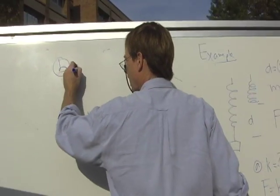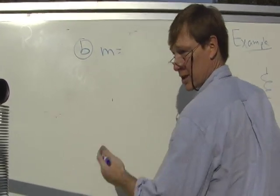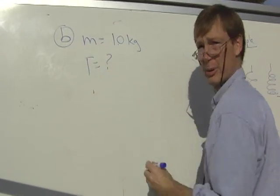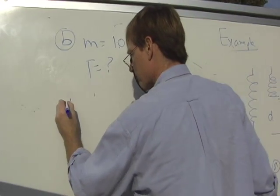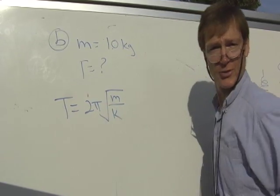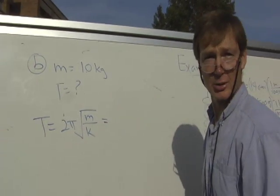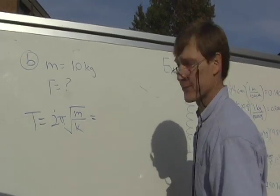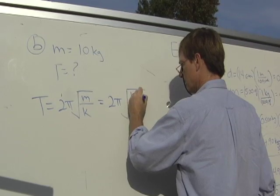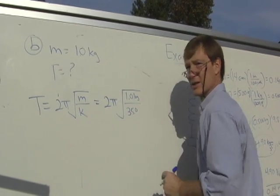Finding the spring constant was the first part. Part B, I have this new mass of one kilogram, and I want to know what's the period of oscillation. The period is 2π times the mass divided by the spring constant. Not the old mass that we determined the spring constant from, but a new one. We're going to get 2π times the square root of 1.0 kilograms divided by 35 newtons per meter.